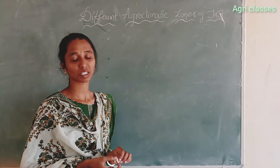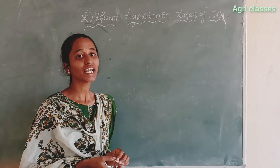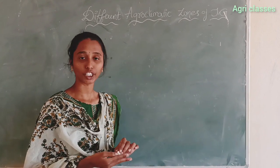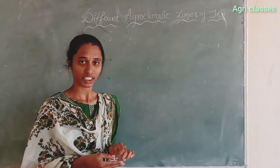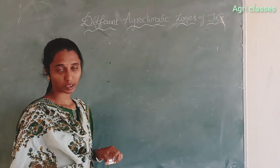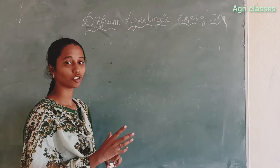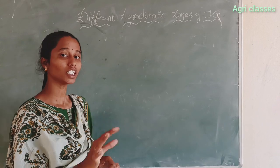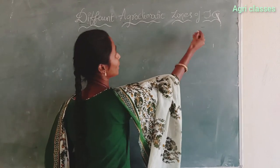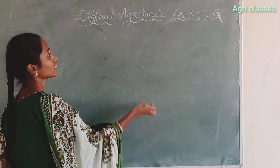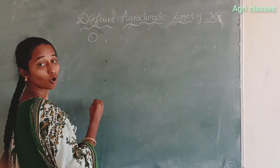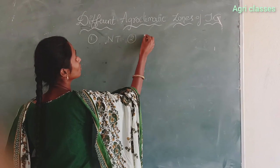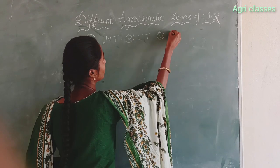Hello everyone and welcome to agri classes. This video will help us know how to do background noise. So first we will discuss different agroclimatic zones. We will discuss three zones in Telangana: one is the Northern Telangana zone, the second one is the Central Telangana zone, and the third one is the Southern Telangana zone.